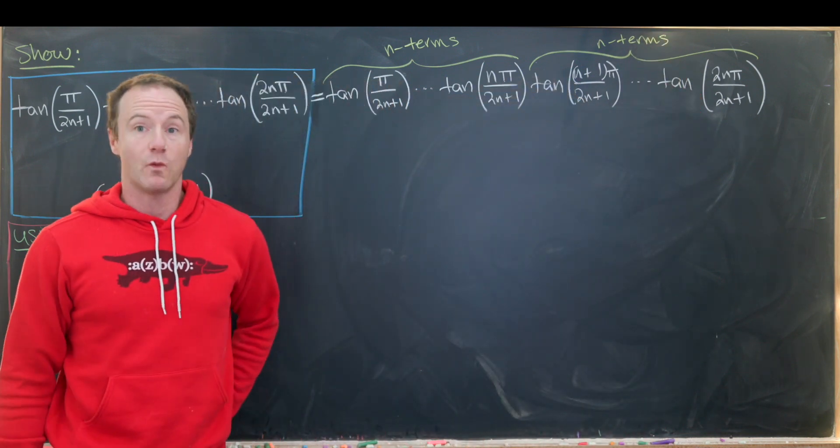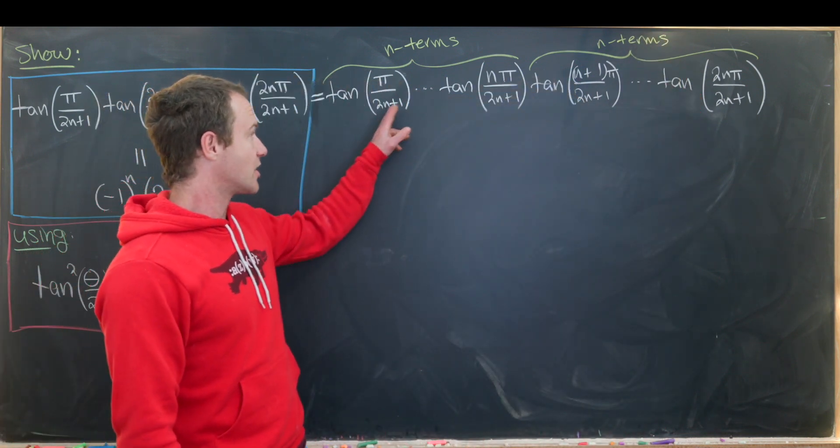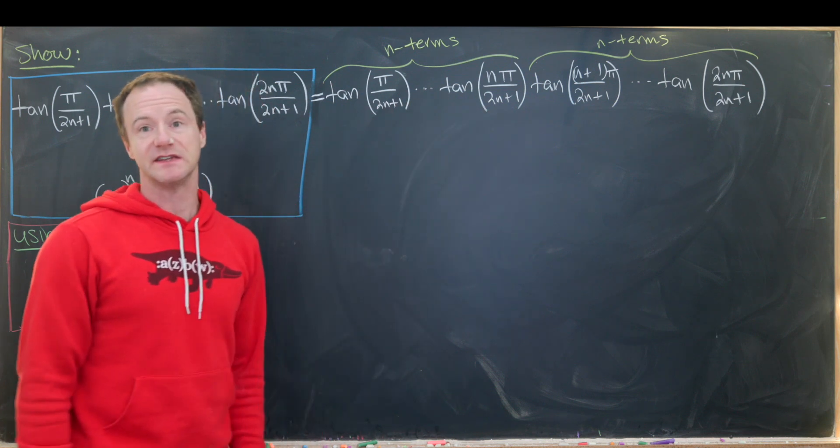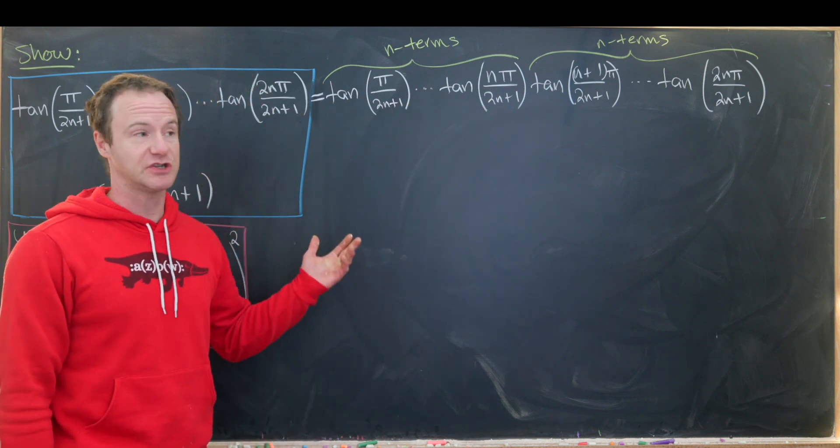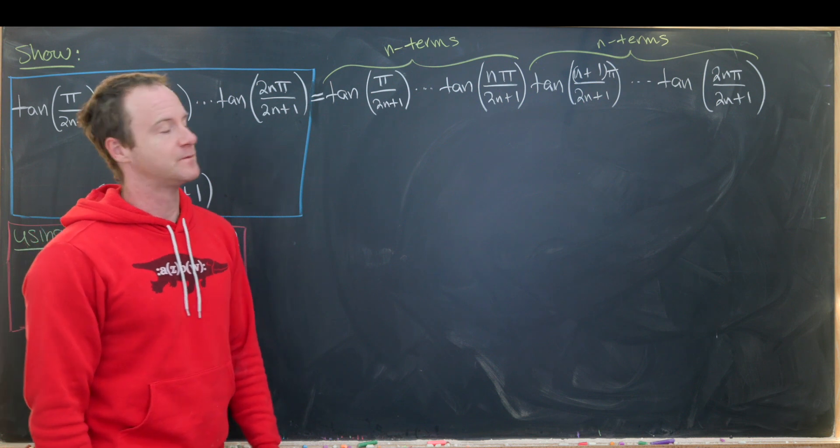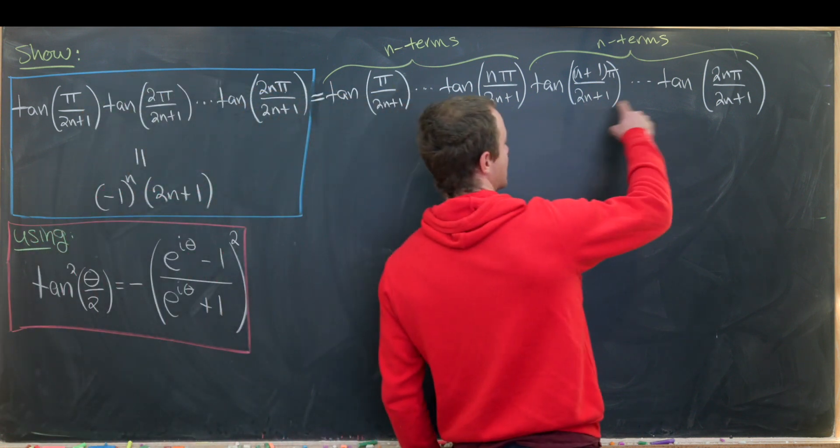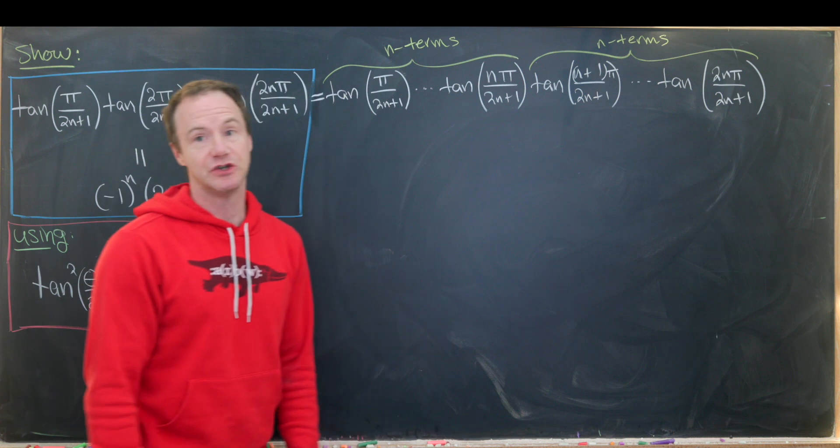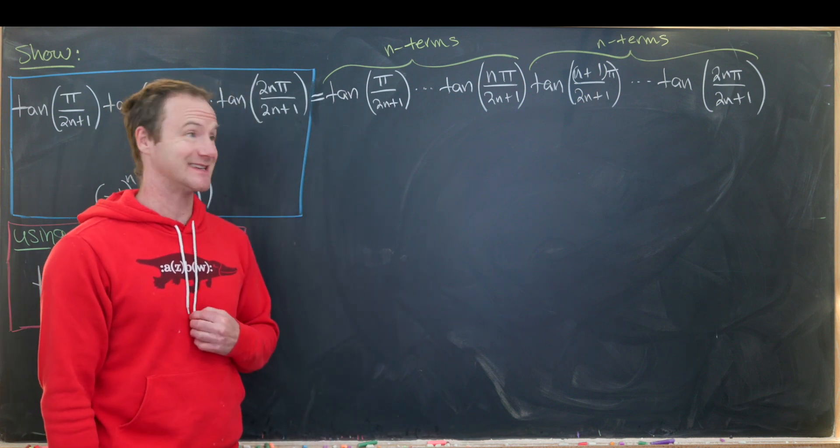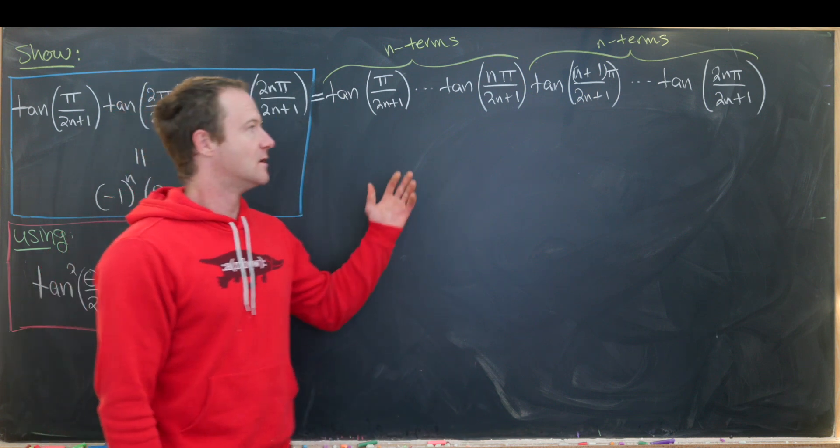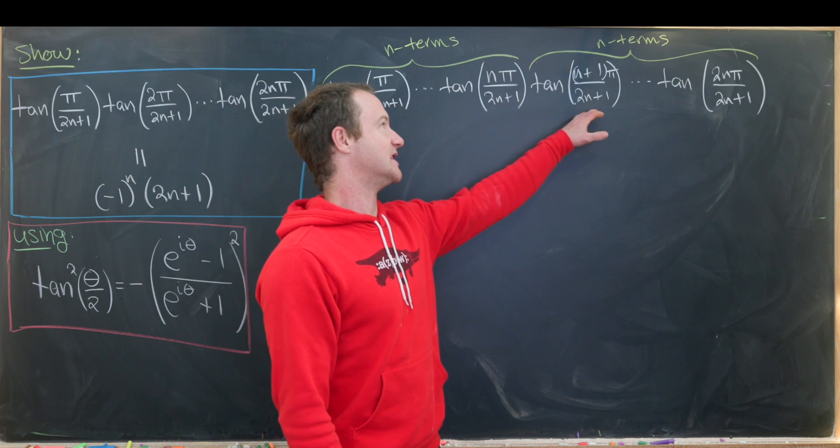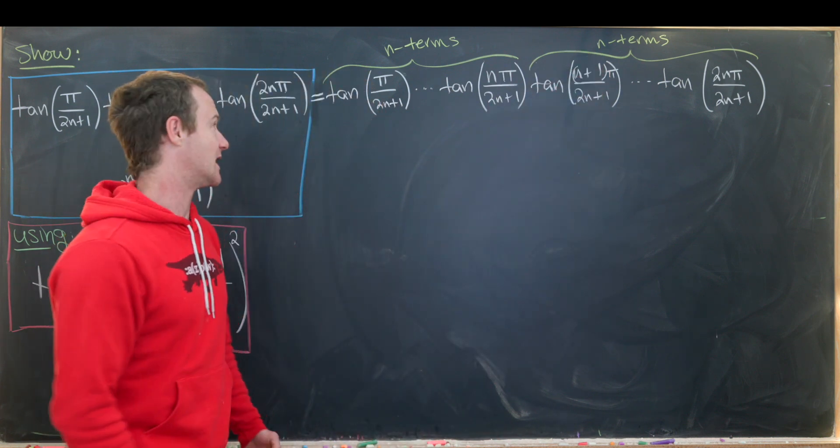And then one thing that we can see is that the argument of tangent in all of these is between 0 and π over 2. Which means tangent is positive. Whereas over here the argument is between π over 2 and π. Which means tangent is negative. But how many times is tangent negative? It's negative n times.